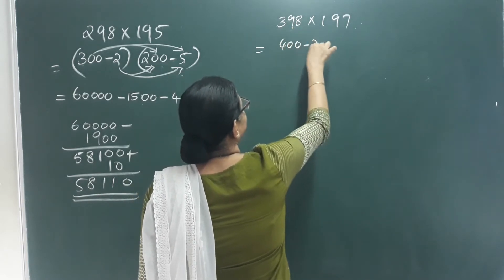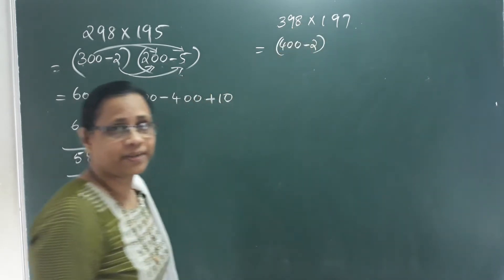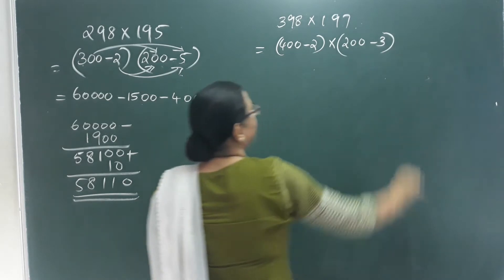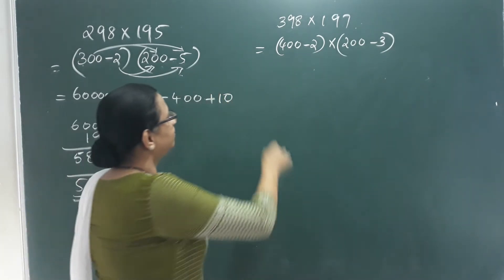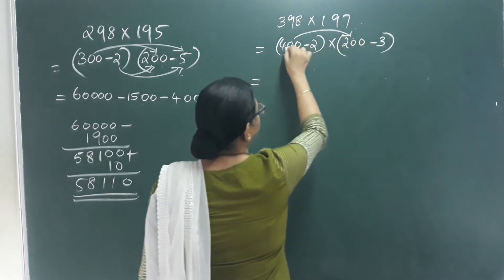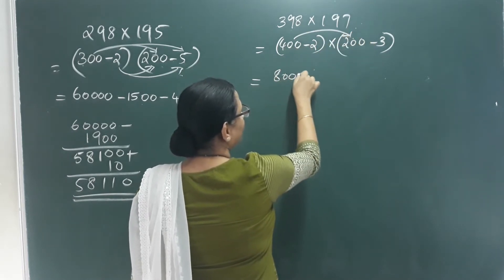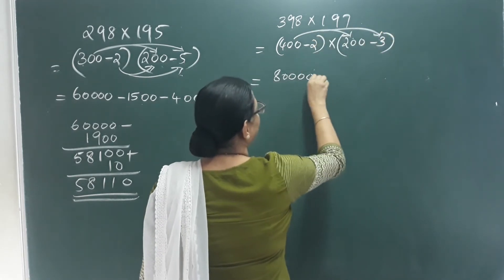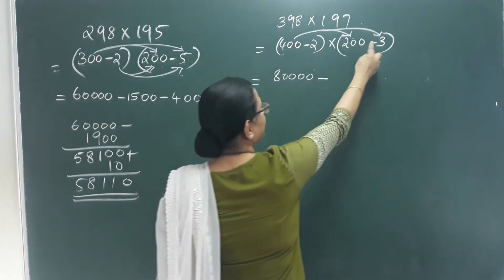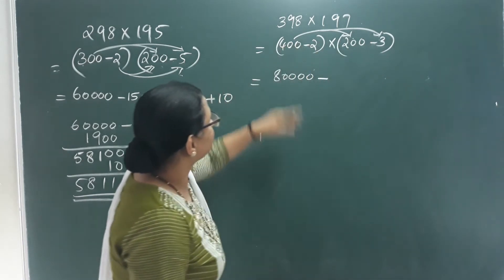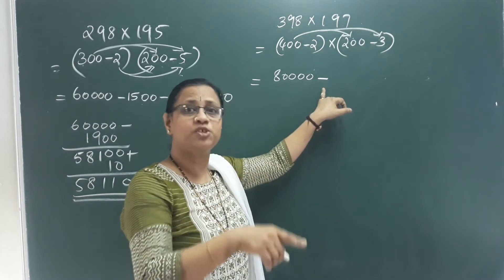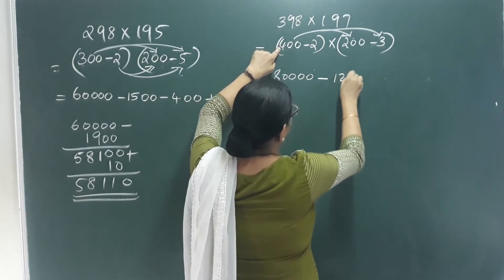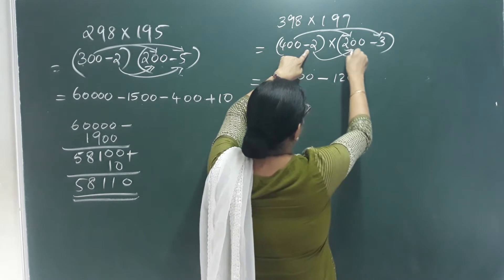400 minus 2 gives 398, and 200 minus 3 gives 197. So how do we multiply 398 by 197? We do 4 into 2 is 8, with 4 zeros. This term is minus. Minus and minus gives plus here. So 4 into 3 gives 12. You use 2 plus in this matter, but this is minus.